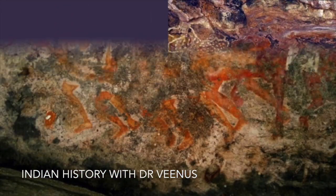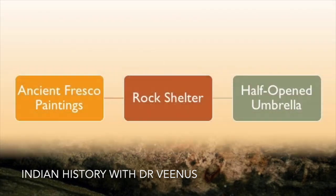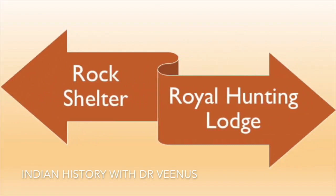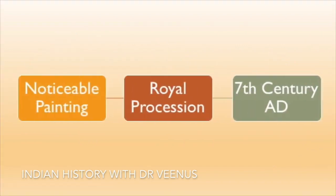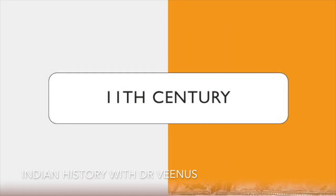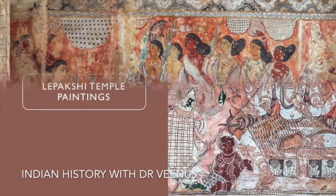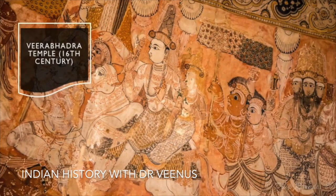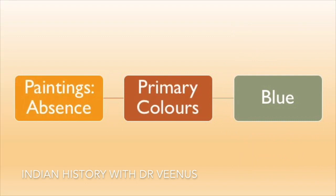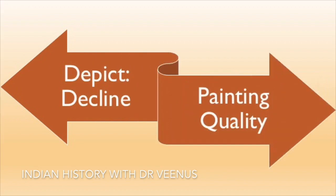Ravanchaya Rock Shelter, located in the Koraput district of Odisha, features ancient fresco paintings on a rock shelter shaped like a half-opened umbrella. It is believed to have served as a royal hunting lodge. The most noticeable painting is a royal procession dating back to the 7th century AD. The remains of Chola period paintings from the 11th century are also important. Located in Anantapur district of Andhra Pradesh, mural paintings were executed on Virbhadra temple walls at Lepakshi in the 16th century during the Vijayanagara period, following religious themes from the Ramayana, Mahabharata and incarnations of Vishnu. The paintings show a complete absence of primary colors, especially blue, depicting a decline in painting quality.